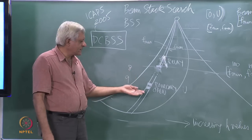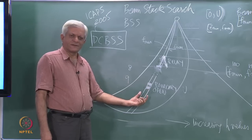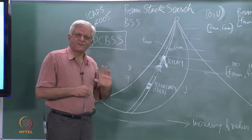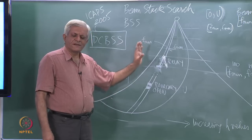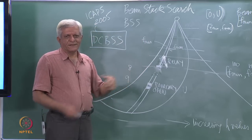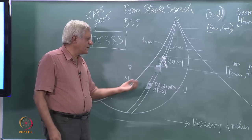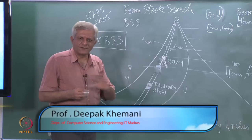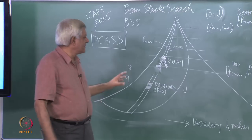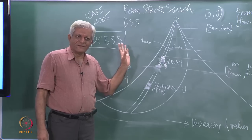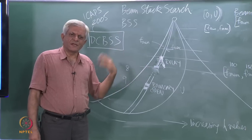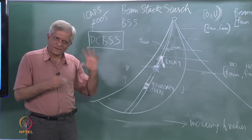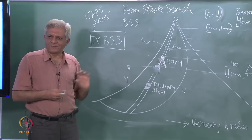Despite this extra work, the space complexity of Divide and Conquer Beam Stack Search is practically constant — you only keep three layers of constant width: open, boundary, and relay. Starting from A*, which required exponential space, we now have an algorithm that requires essentially constant space. In today's era of large memory, you can keep the beam width as large as memory allows, and it will work effectively.